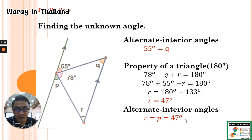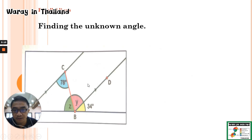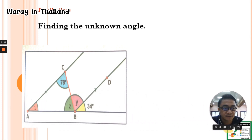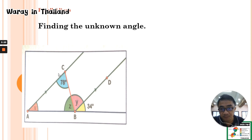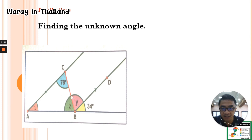Now for the next problem. We have parallel line AC and line BD, with transversal lines BC and AB. We need to find angles X, Y, and Z. The given angles are 78 degrees and 34 degrees.